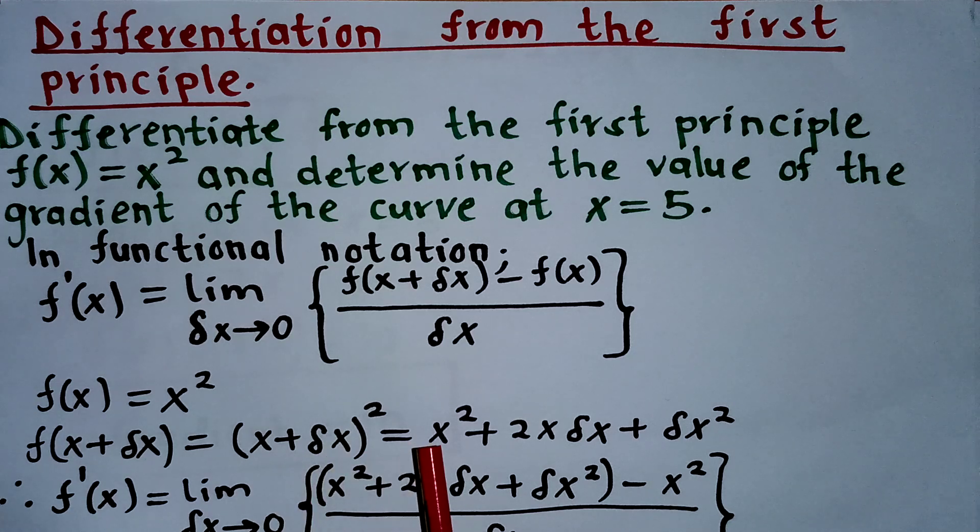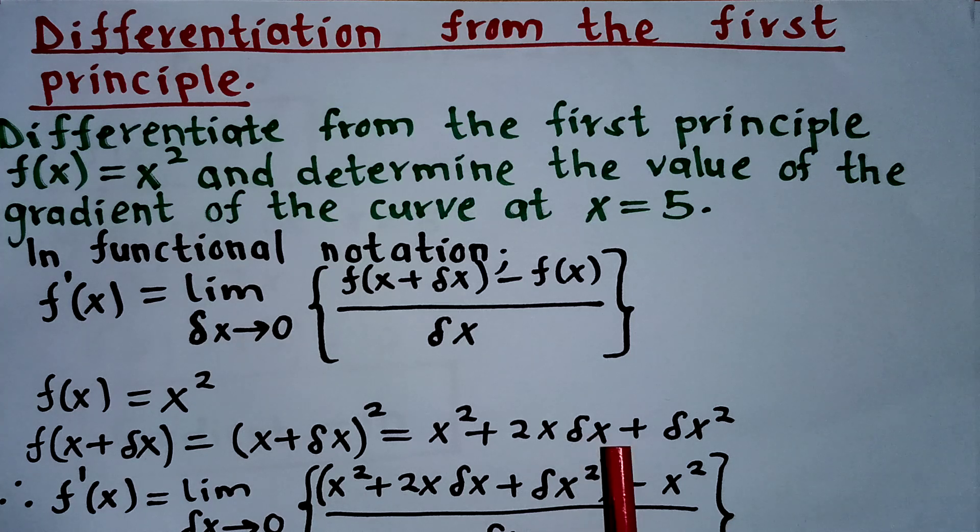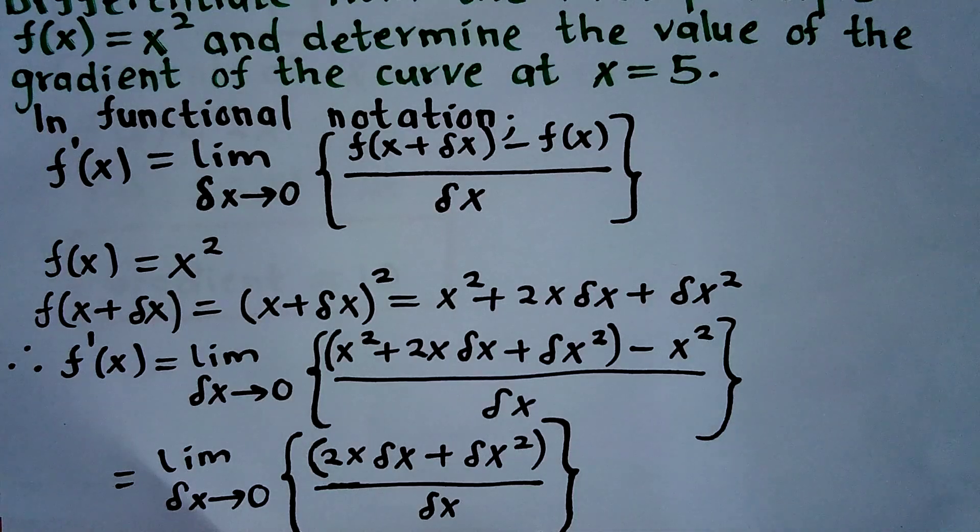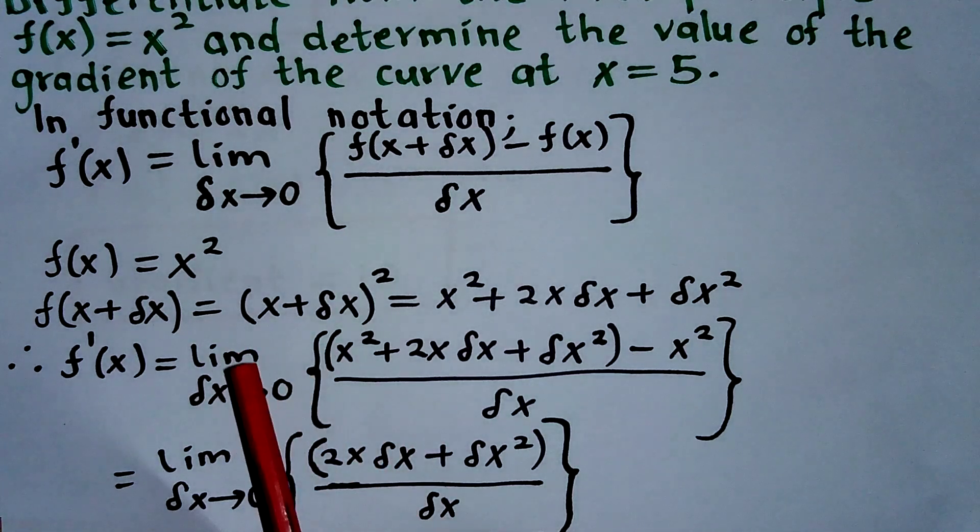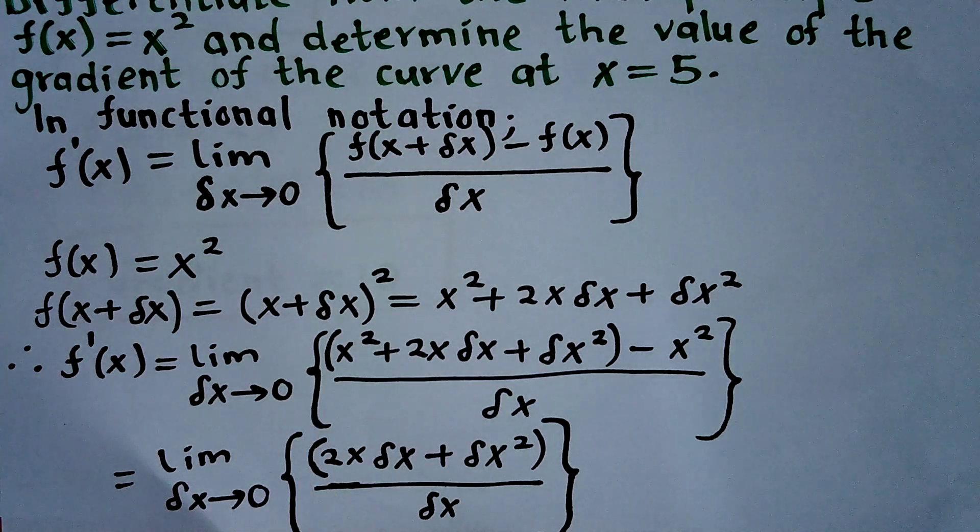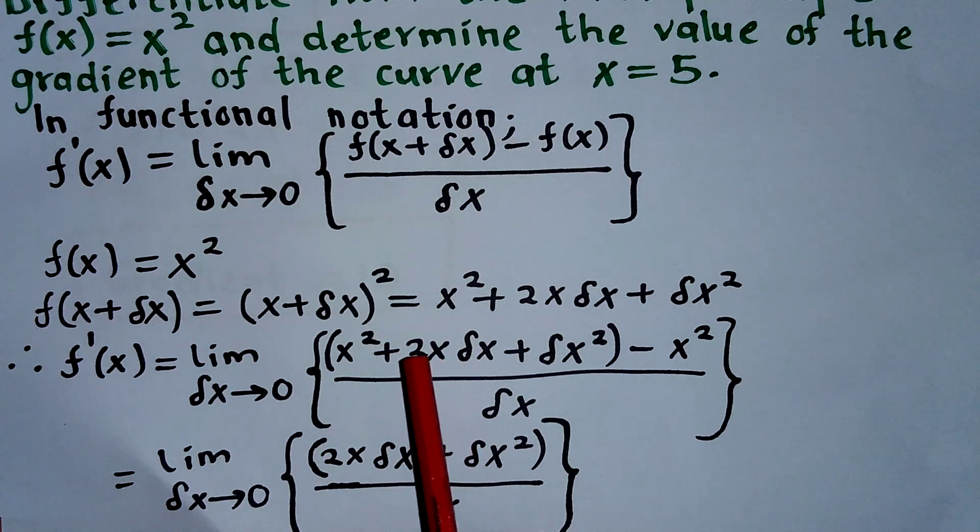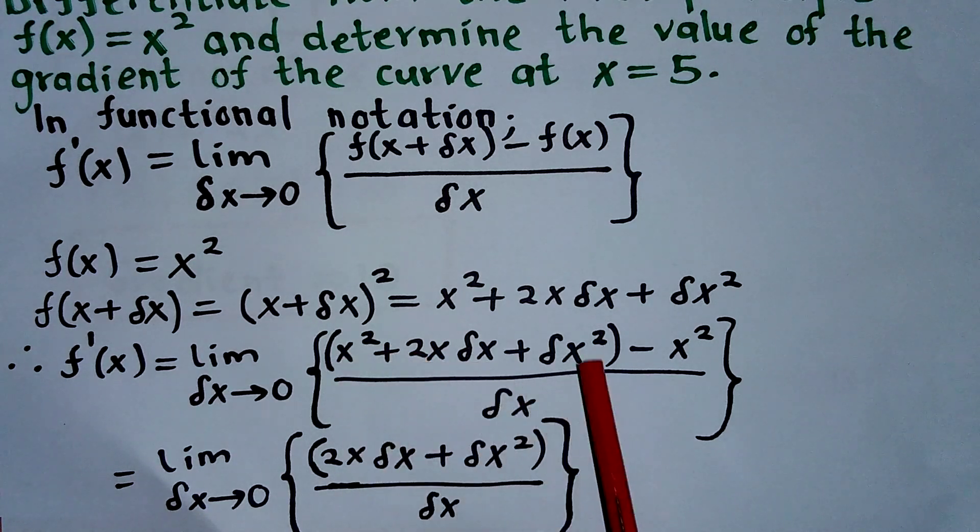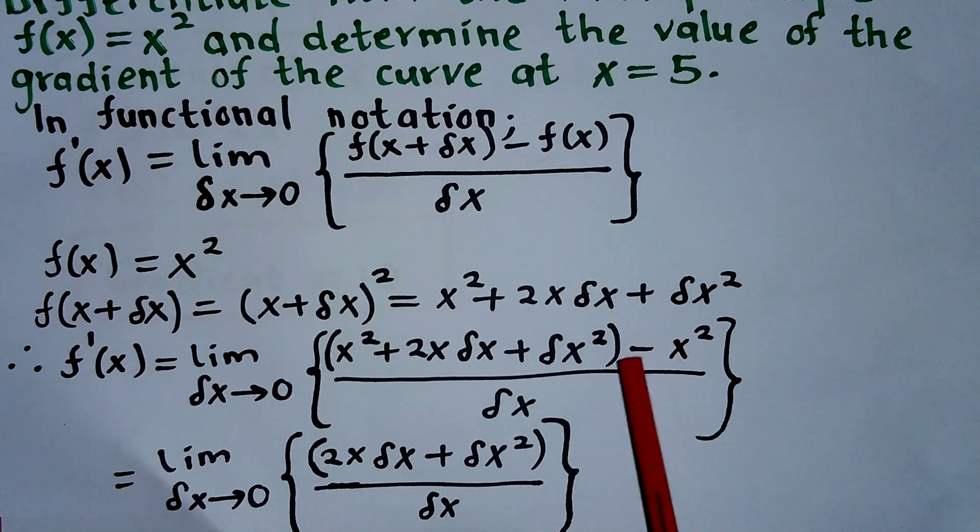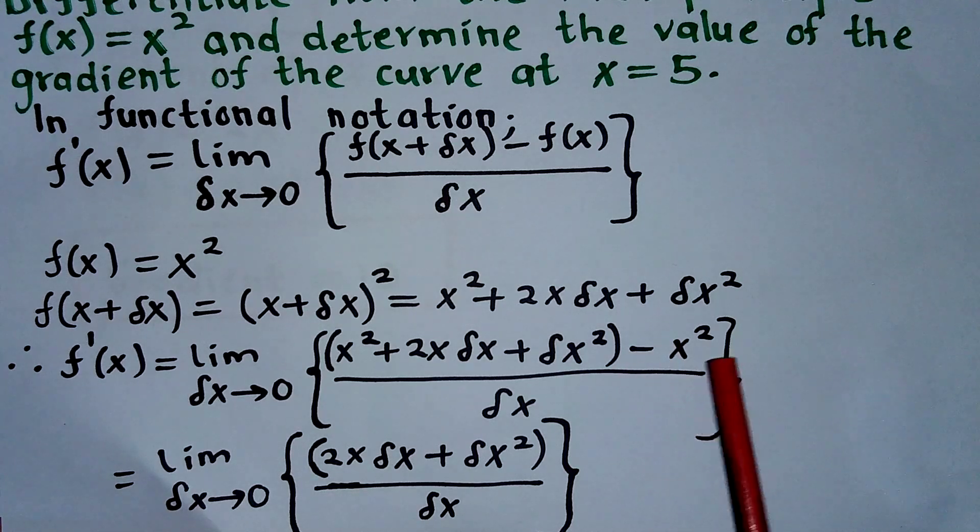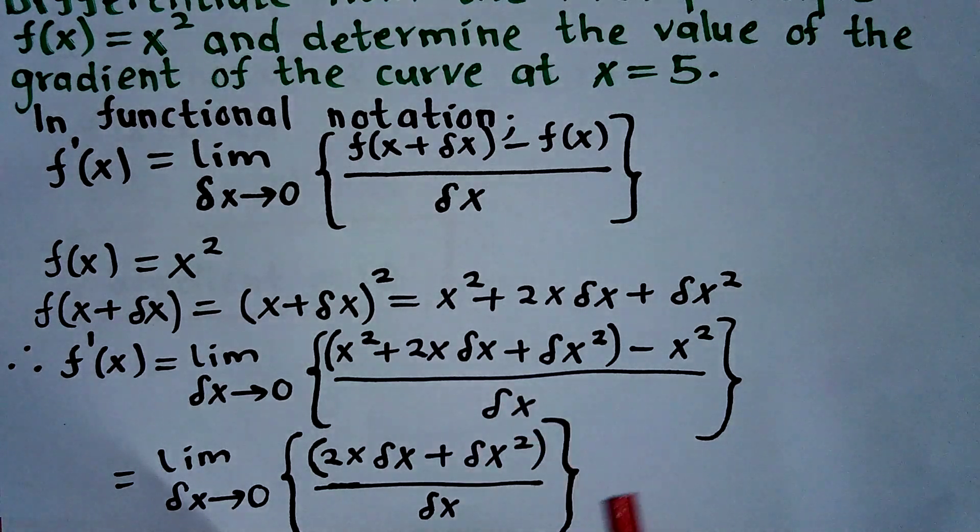I can then expand this so that I can have x² + 2x·δx + δx². And then I'm going to rewrite that. That means the first derivative of x is going to be the limit when δx is tending to 0 of (x² + 2x·δx + δx²) - x² over δx.